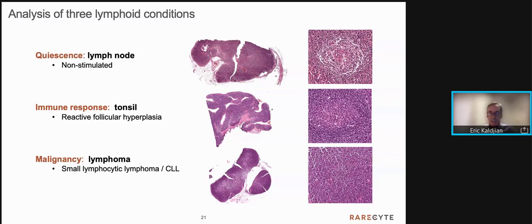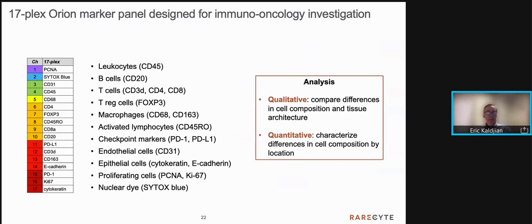With that as introduction, I'd like to present a comparative investigation of lymphoid tissues by Orion High Dimensional Imaging. There are three tissues used in this study representing three different conditions. First, non-stimulated lymphoid tissues are represented by a quiescent lymph node. Reactive immune response is represented by a hyperplastic tonsil. And finally, malignancy is represented by small lymphocytic lymphoma, the tissue counterpart of chronic lymphocytic leukemia, or CLL.